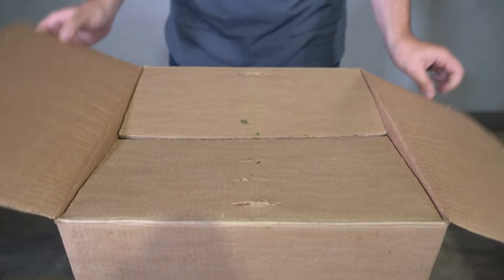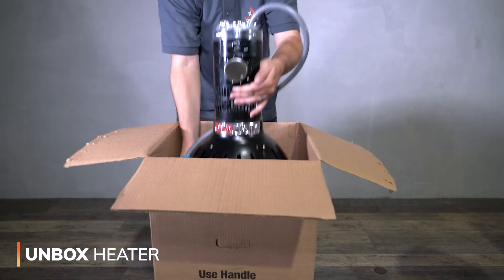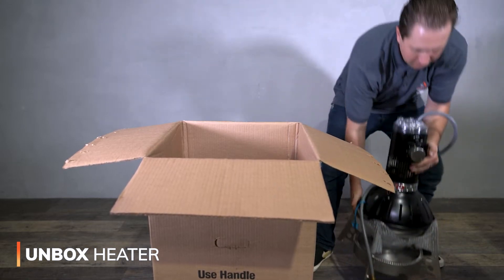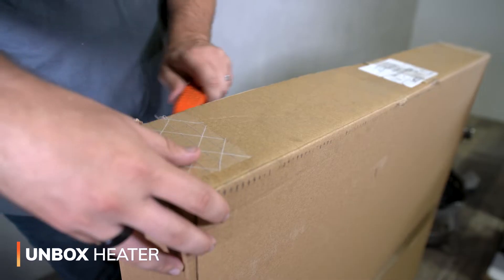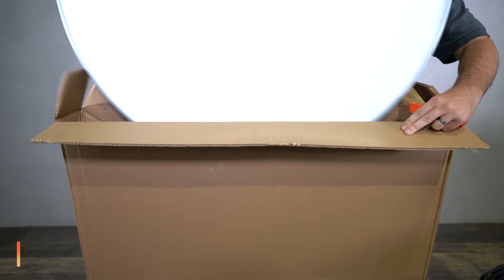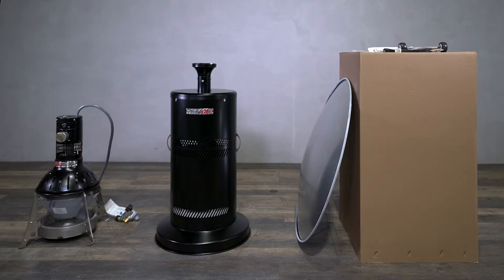Next, we'll open the second largest box and remove the heater head assembly, making sure to slowly set it down to avoid damaging any parts. Lastly, we'll remove the heat reflector from its box and set it aside. Now that all our pieces are laid out, we are ready to start assembling the heater.